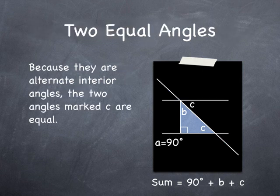If we draw a line parallel to the base of the triangle, we find another angle equal to angle C.